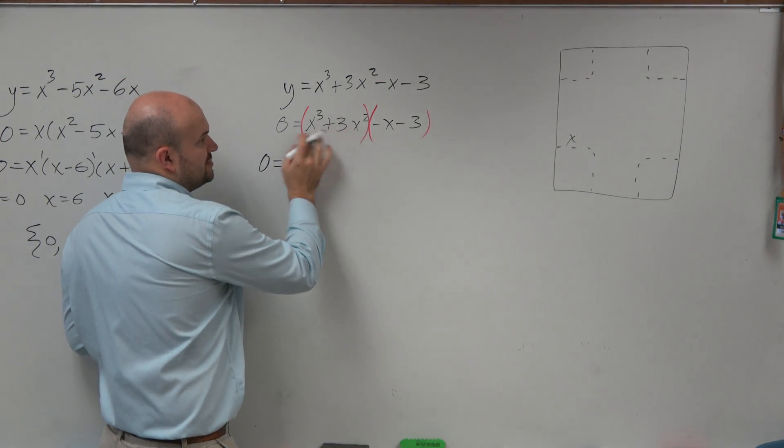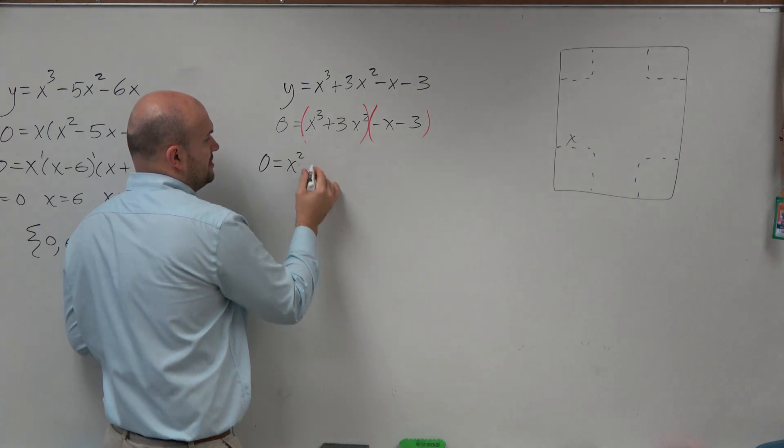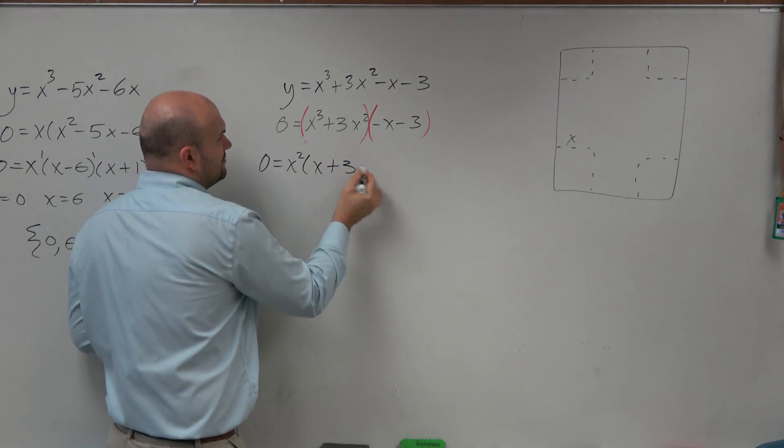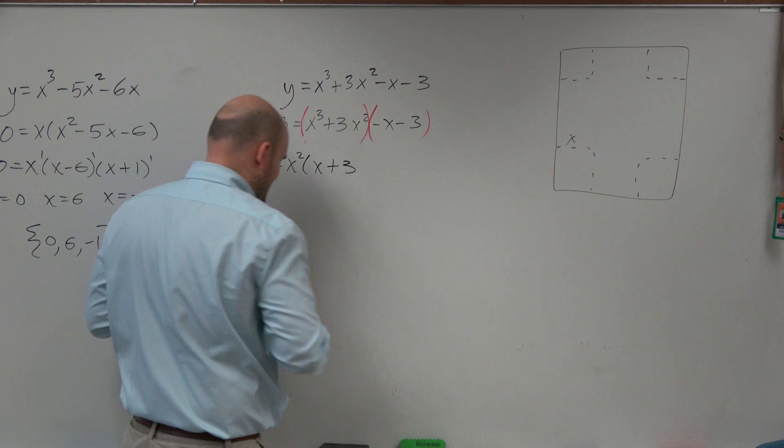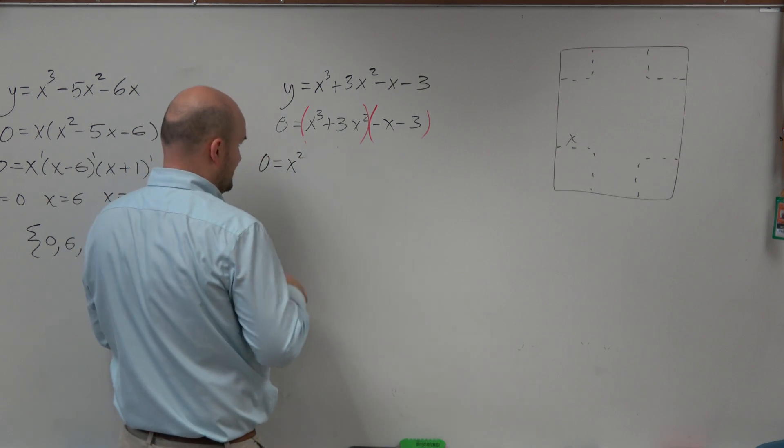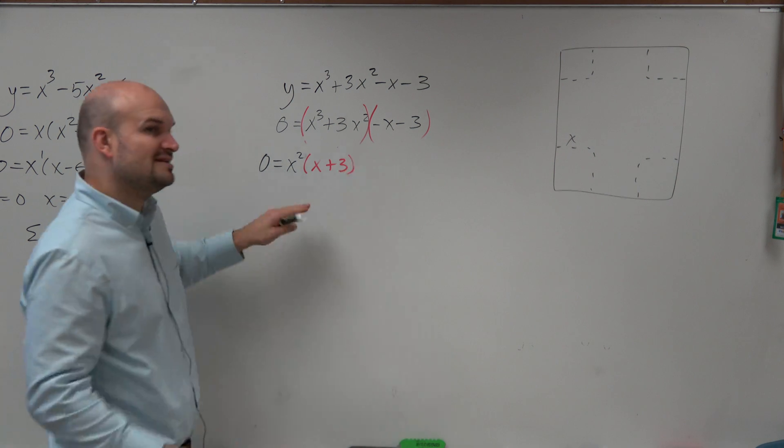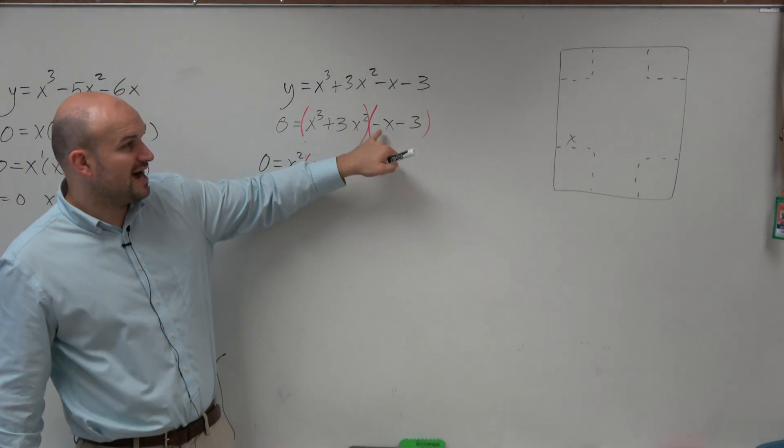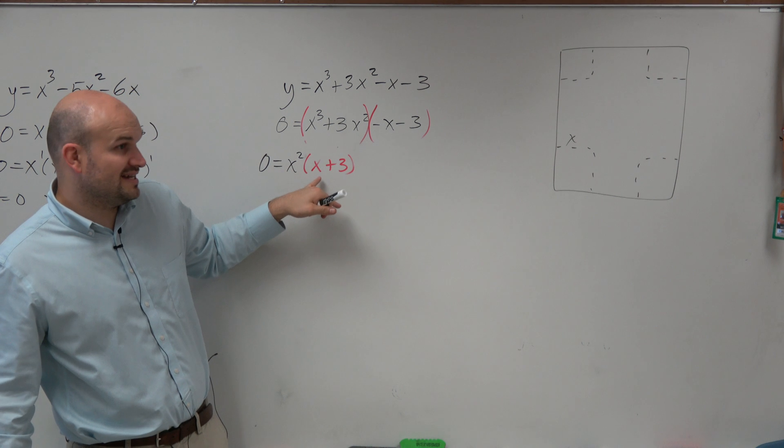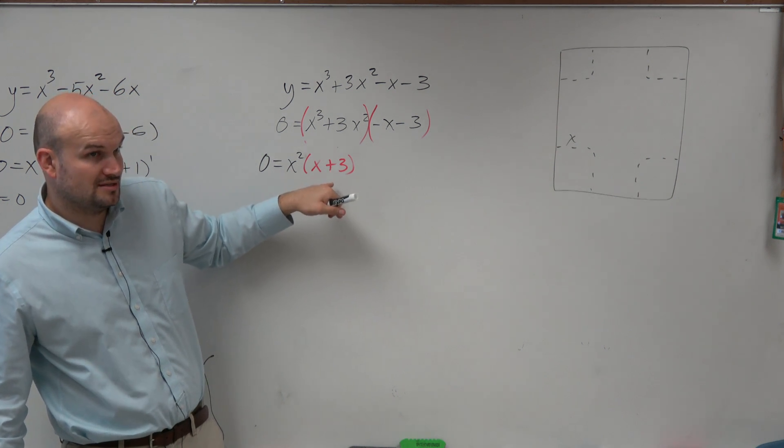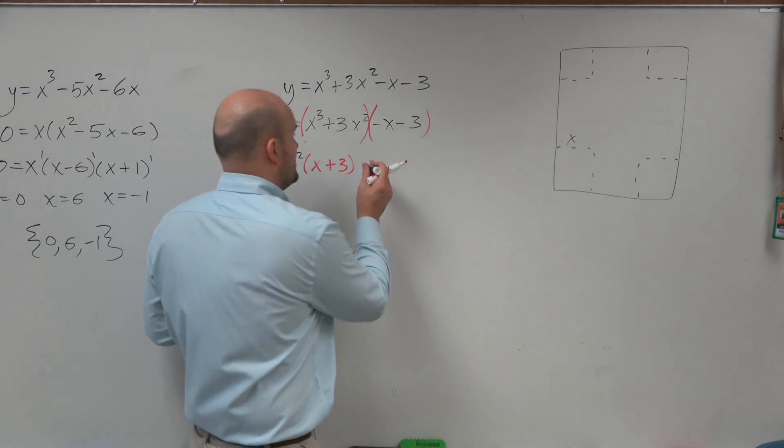So if I say, what do these two have in common? I could say an x squared. Now, when doing factoring by grouping, what we want to do is, inside the parentheses, what's left over, we want to be the same. So over here, I have a negative x minus 3. I want that to be a positive x plus 3. So you'd want to factor out a negative 1.